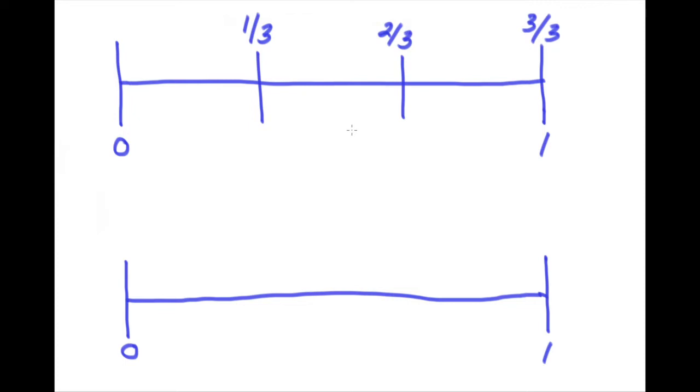I'll use the next line to show three-fourths, so I'll break this line into four equal pieces and label each piece one-fourth, two-fourths, three-fourths, and four-fourths, which is equal to one whole again.